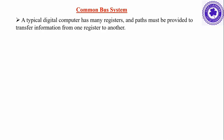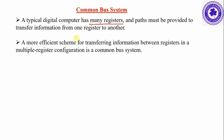A typical digital computer has many registers. Any computer may have many registers and paths must be provided to transfer information from one register to another. A more efficient scheme for transferring information between registers in a multiple register configuration is a common bus system.